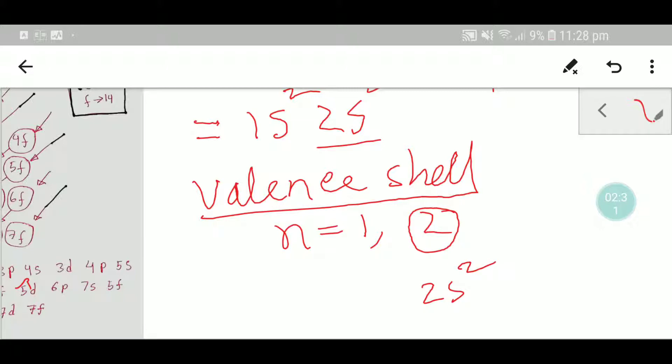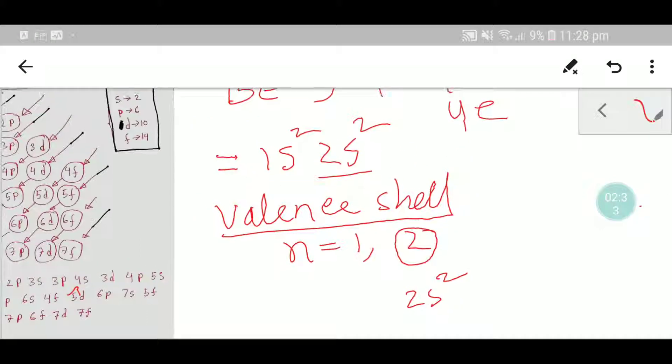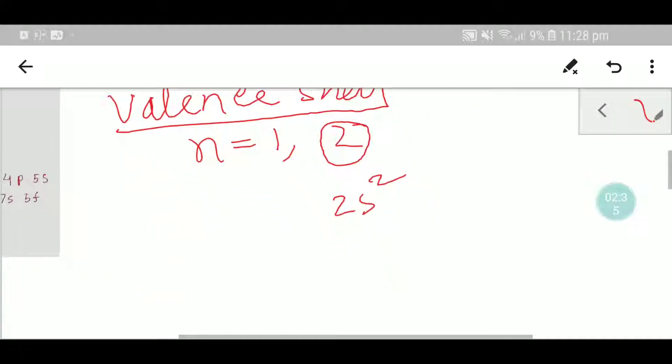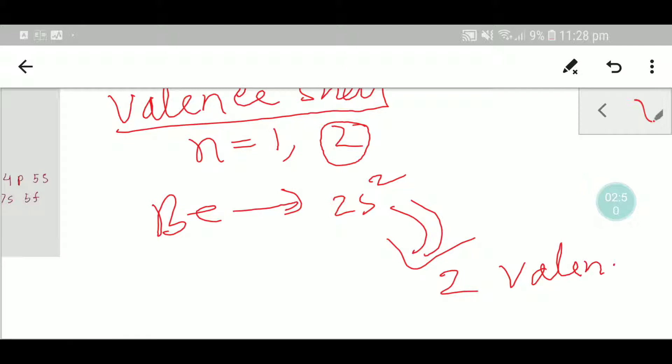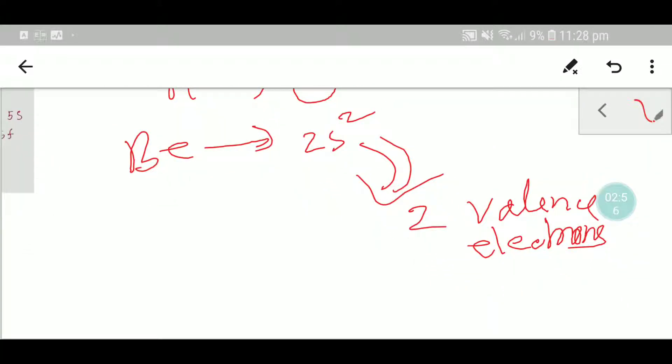The electrons of the valency shell are called valency electrons. That's why beryllium has two valency electrons.